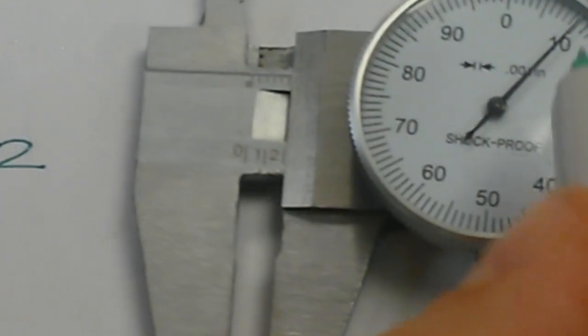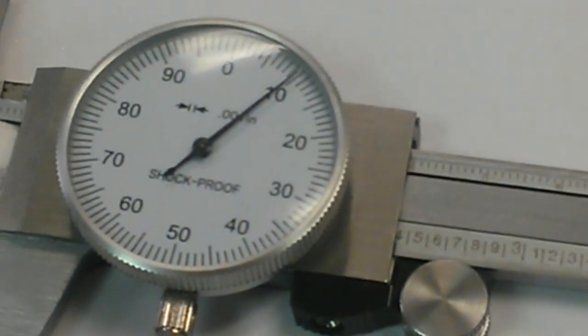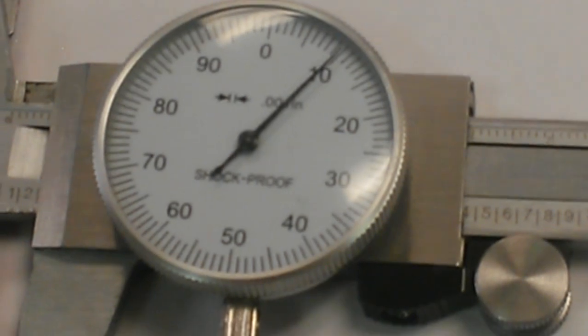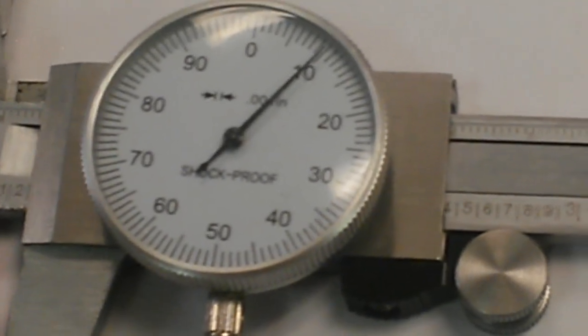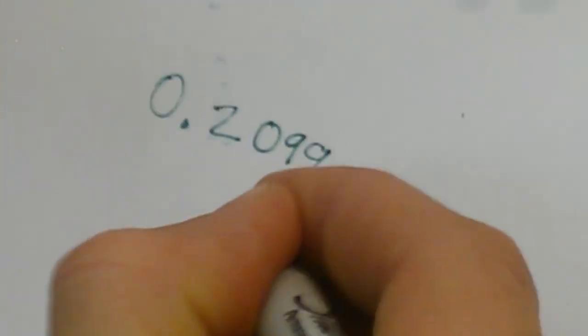Again our whole number is zero. Zero point looks like we made it to the two and we can see the line after the two. So zero point two and then I'm gonna call this 0.209. So you can see it's barely past two. So zero point two zero nine makes sense. And then it looks like we're very close to the ten. So I'm gonna go ahead and put zero point two zero nine nine. Again this is the uncertain digit.